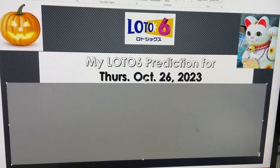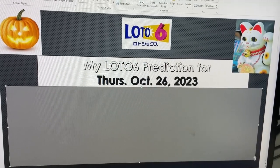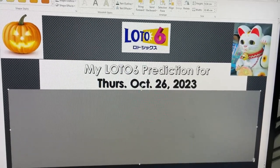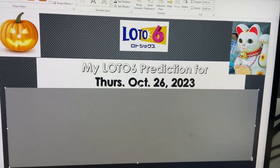Hello my lottery friends, it's James Ian Kobe. Get ready for my Lotto 6 prediction for Thursday, October 26th, 2023. First, I'll show you my worksheet, then I'll read the numbers, and then I'll show you the numbers.